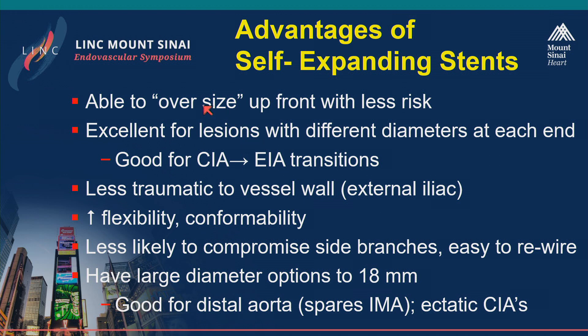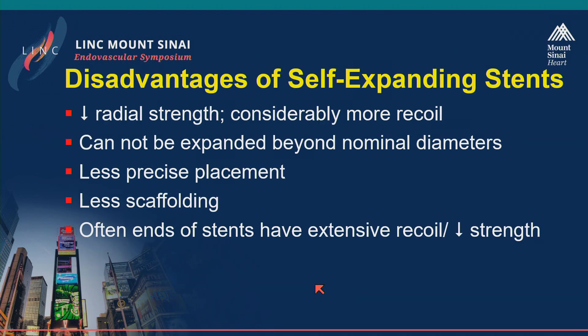What about self-expanding stents? You can oversize them up front with less risk, and they're very good for transitions — for example, common iliac artery to external iliac artery. They're less traumatic to the external iliacs, less likely to compromise a side branch, and they have much larger diameters available which in some settings may be very beneficial. The big disadvantage is decreased radial strength, and they have a lot more recoil.